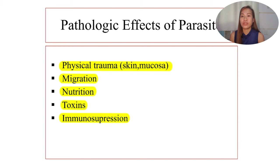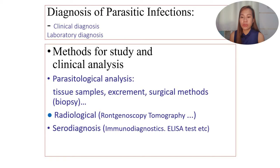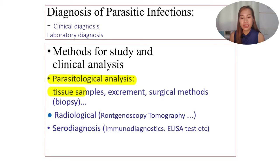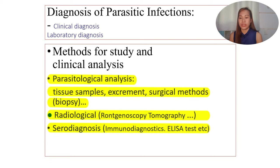In diagnosing parasitic infections, we have both clinical and laboratory diagnosis. Methods include parasitological analysis using tissue samples, excrement, and surgical methods such as biopsy. Radiological methods such as X-ray, rentgenoscopy, and tomography are also used. Additionally, serodiagnostics including immunodiagnostics and ELISA tests. These general concepts will be discussed in more detail when we cover individual parasites.